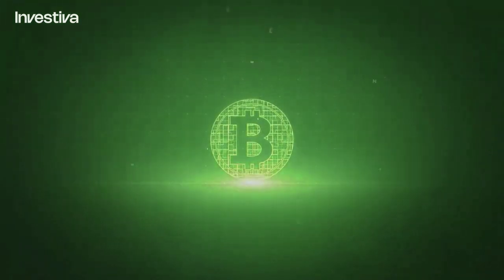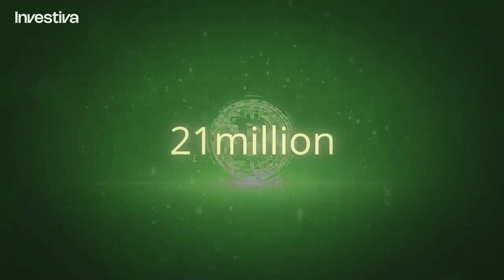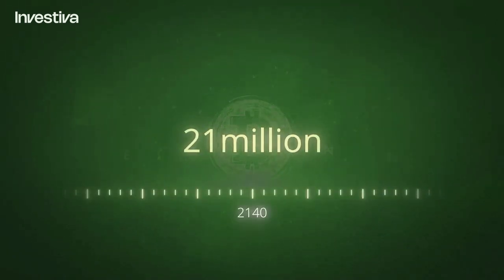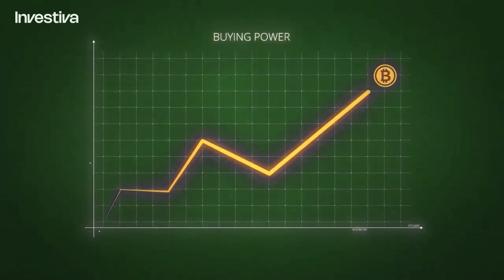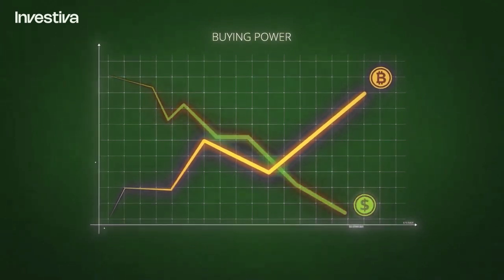The maximum supply of most cryptocurrencies is limited. In the case of Bitcoin, there will only ever be 21 million in existence, with the last Bitcoin being mined around the year 2140. The limited supply makes Bitcoin a deflationary asset instead of an inflationary one such as fiat currencies.